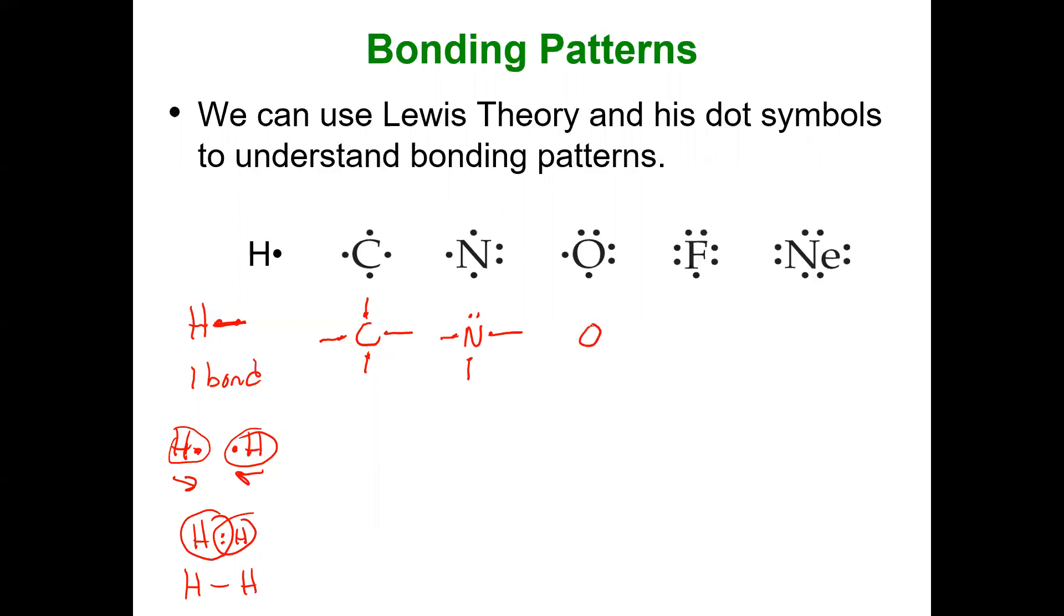Oxygen, 6A. It needs two more electrons, two bonds. Fluorine, it's got seven valence electrons. It needs one bond.